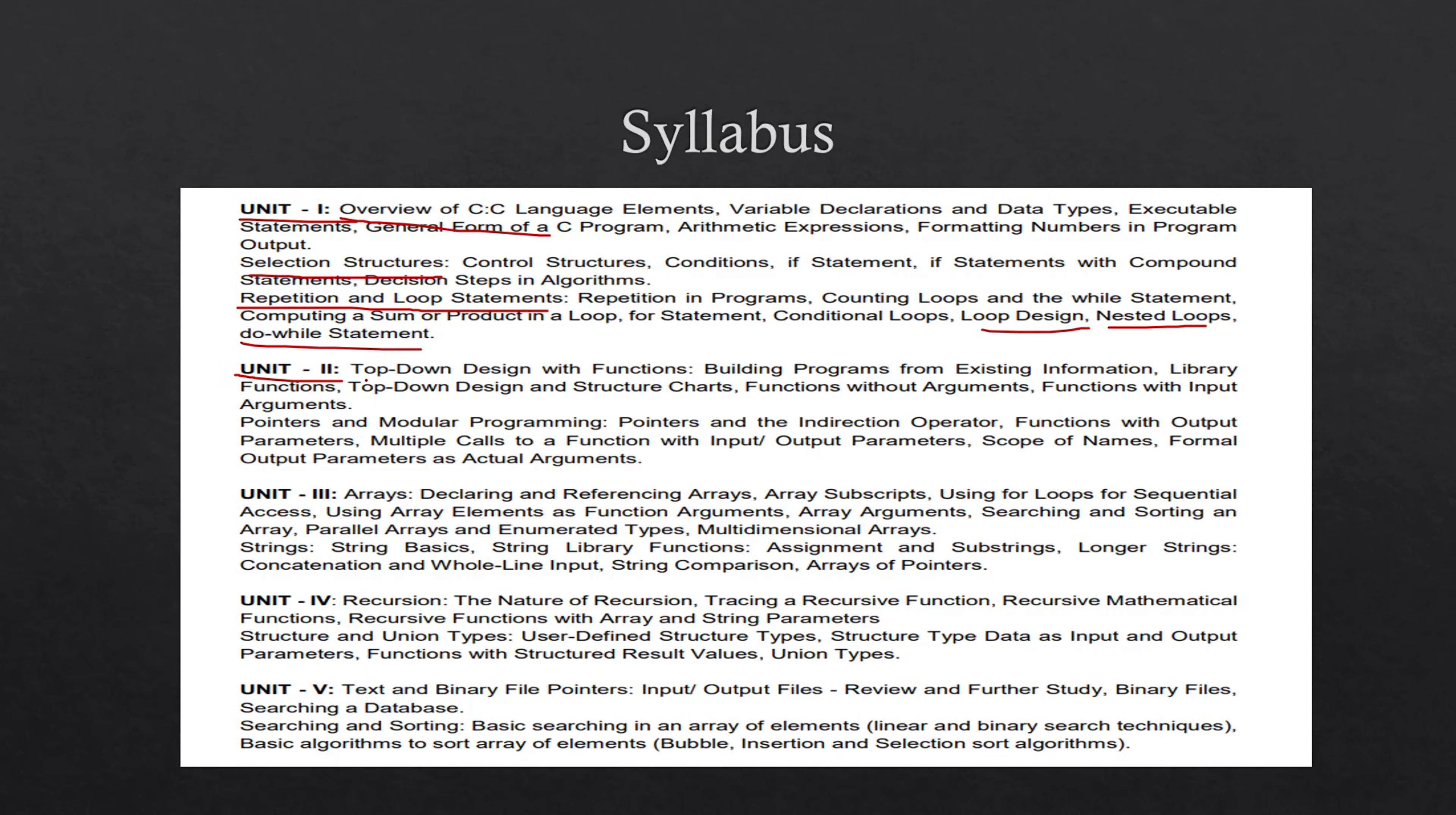Unit 2 covers top-down design with functions, pointers and modular programming. Unit 3 covers arrays and strings, so one question from arrays and one from strings will be compulsory, plus recursion, structures and union types. Unit 5 covers binary text files, file pointers, and searching and sorting. One question from each topic.